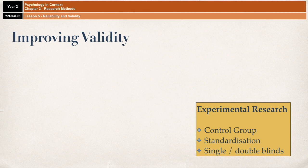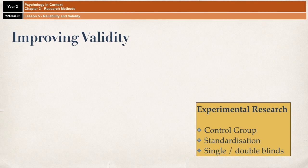How do we improve the validity of a study? These are very popular questions in research methods sections of papers. For experimental research, using a control group means we're able to assess whether changes in the dependent variable were actually due to the effect of the independent variable. In a study looking at the effectiveness of a particular therapy, having a control group that didn't receive the therapy gives the researcher greater confidence that any improvement seen was actually due to the therapy.